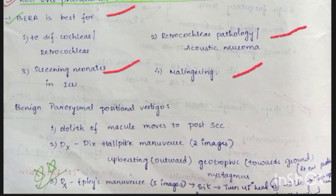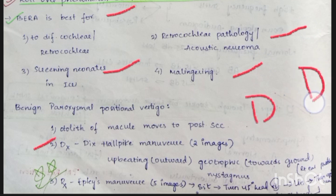In Benign Paroxysmal Positional Vertigo (BPPV), otolith of the macula moves to the posterior semicircular canals. For diagnosis, we use the Dix-Hallpike maneuver — D for diagnosis. If two images are given, it represents the Dix-Hallpike maneuver.